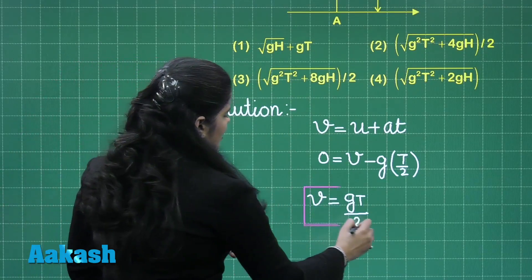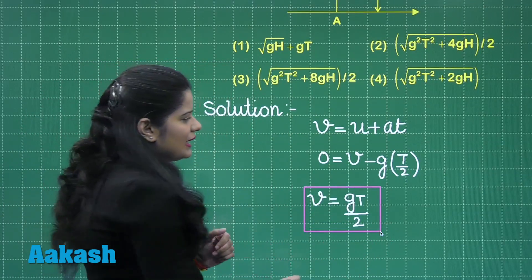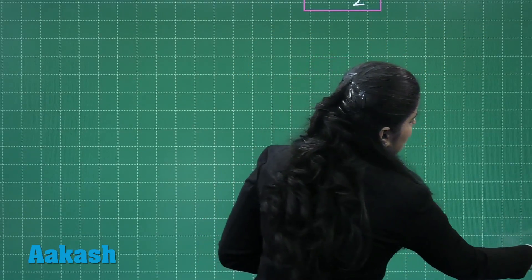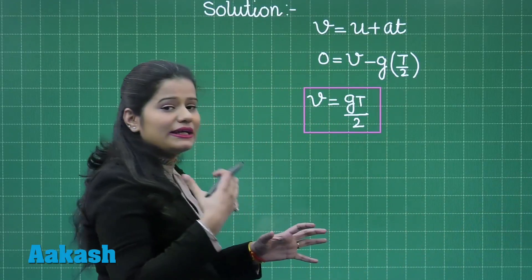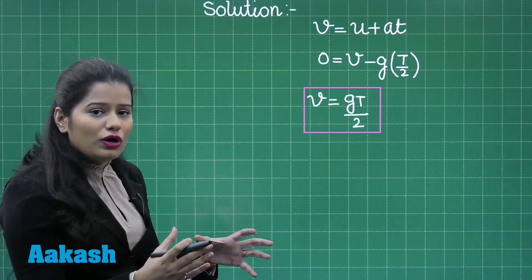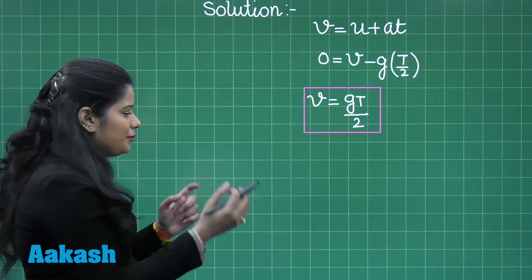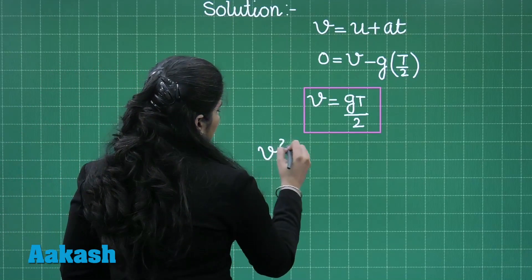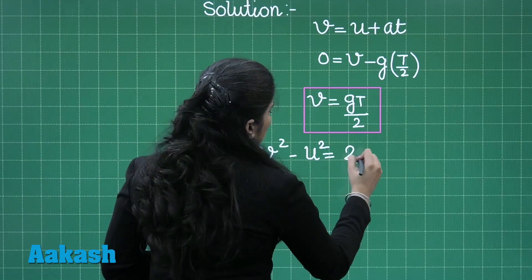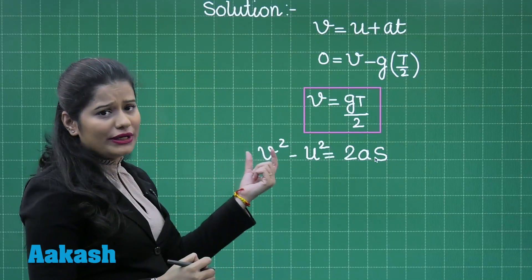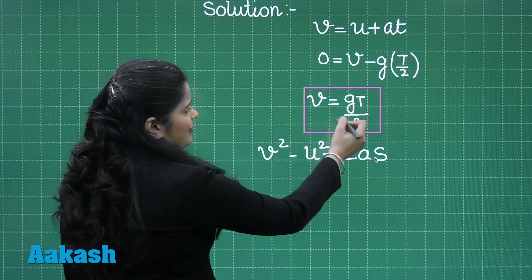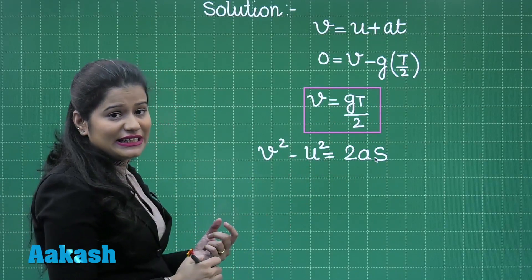Now what I will do next? If I take the initial velocity to be U, I can apply equation of motion there too. So for the motion of the ball from point A to point B I can write V square minus U square is equal to 2AS. At point B, what is the speed? We just have calculated it. It is GT by 2.